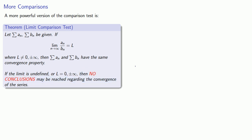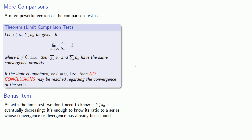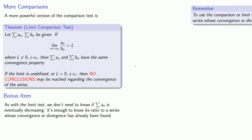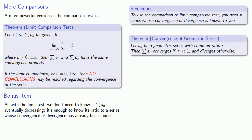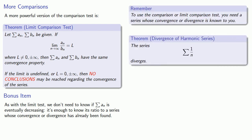There's a bonus item here. As with the comparison test, we don't need to know if our series is eventually decreasing. It's enough to know its ratio to a series whose convergence or divergence has already been found. To use this test, we need a series whose convergence or divergence is already known — that would be the geometric series, the harmonic series, or the p-series.